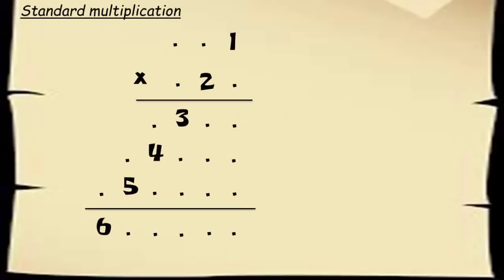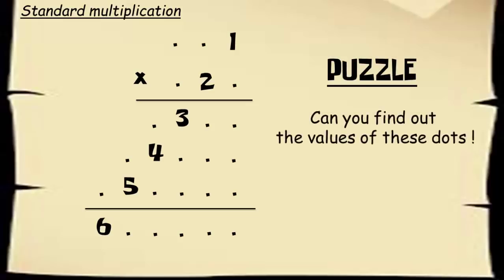You are given a multiplication of two three-digit numbers. It follows a beautiful pattern of numbers from one through six in a diagonal format. But all other digits in this calculation are hidden with dots. Can you find out the values of these dots? Pause the video and think logically.